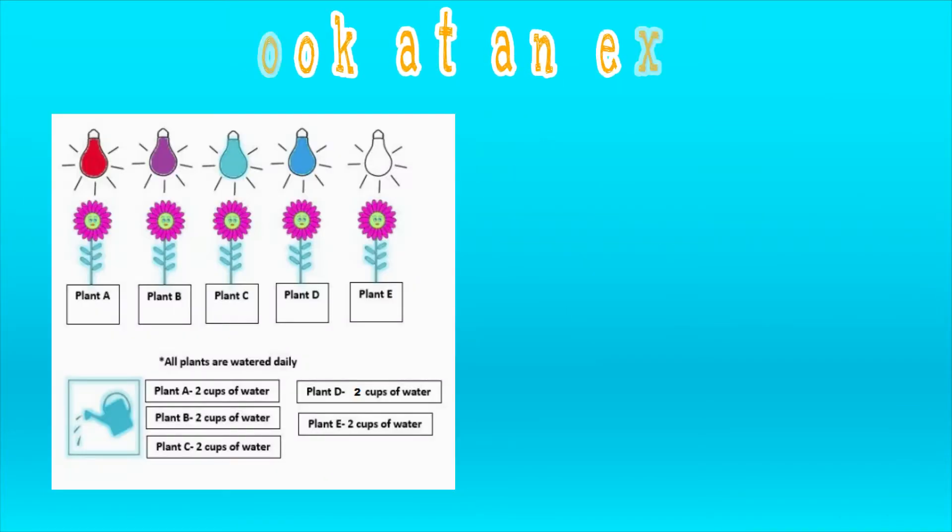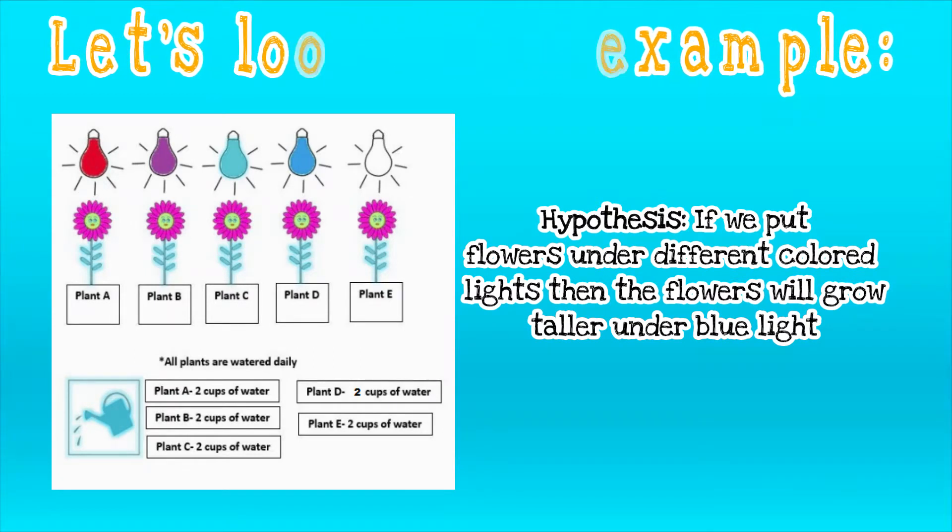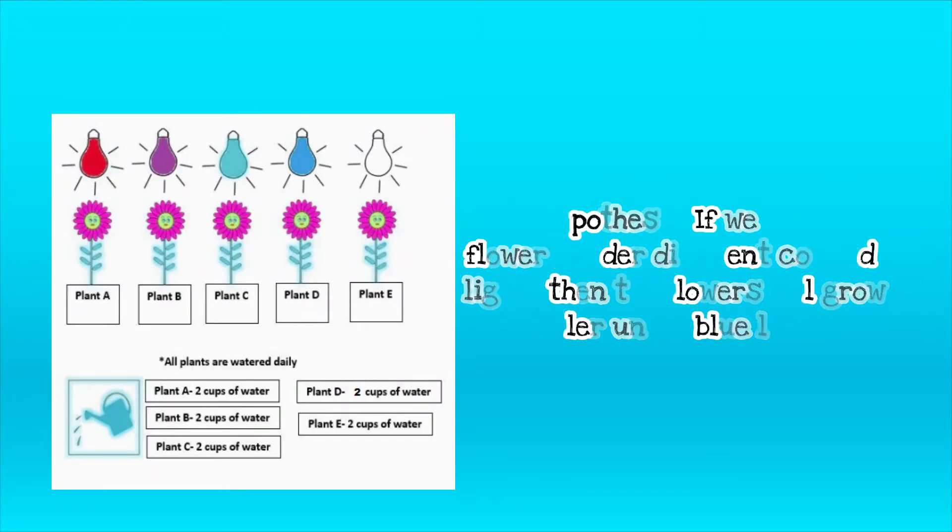Let's take a look at an example. The hypothesis in this experiment is that if we put flowers under different colored lights, then the flowers will grow the tallest under the blue lights. So let's take a look at this particular experiment. As you can see in this experiment, we have red, purple, teal, dark blue, and white light. All of the flowers are the same type of flower and they're all being watered the same amount each day.